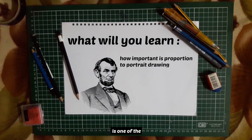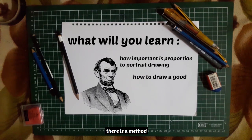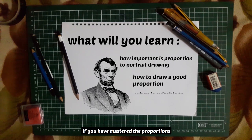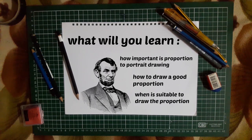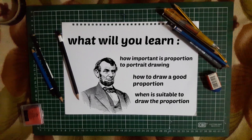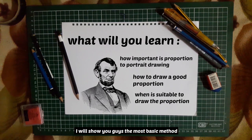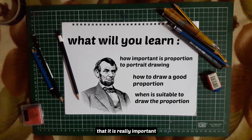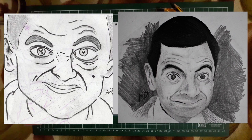Getting the proportions correct is one of the hardest phases for most artists to get right. But don't worry, there's a method on how you can get your proportions correct. It is actually quite simple once you've mastered it, but tiny mistakes will surely have some negative effects like bad positioning, drawing it too fat, too slim, or such. I will show you guys the most basic method — some of you guys ignore it or didn't even notice — that is really important to get from this level to this level. The first Mr. Bean had some error in it, but the second is much more appealing than the first one.